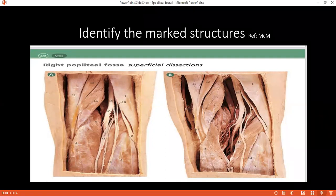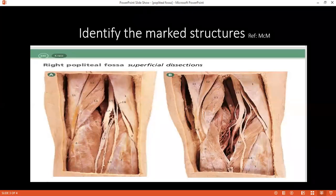Can you tell me the surface marking of extensor hallucis longus muscle? It originates from the mid-fibula, extends downward between tibialis anterior and extensor hallucis brevis, passes on the dorsum of the foot, and is inserted into the distal phalanx of the great toe. What are the vessels and nerves found deep to extensor hallucis longus? Tibialis anterior artery, tibialis anterior vein, and the deep peroneal nerve.